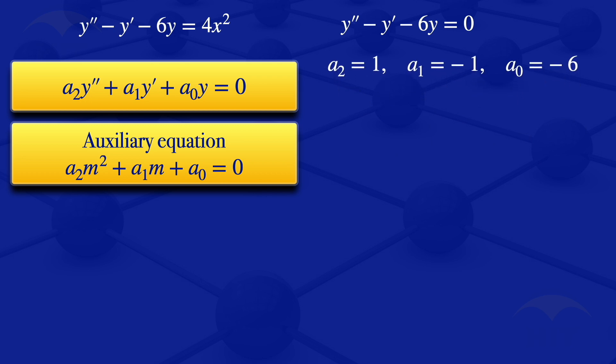We now need to get the auxiliary equation. We substitute these values in, so our auxiliary equation is m squared minus m minus 6 equals 0. The roots of the auxiliary equation determine the nature of the solution we get.